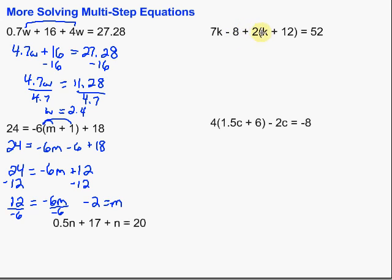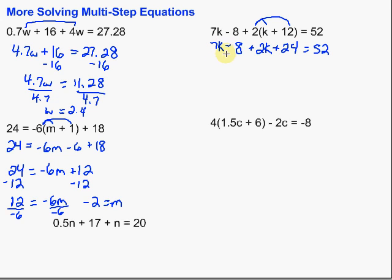In this next one, we've got parentheses again, so we need to get rid of those. We distribute that 2 through: 2 times k is plus 2k, and 2 times 12 is plus 24. So we have 7k minus 8 plus 2k plus 24, equal to 52. Then we combine like terms: 7k and 2k combine to 9k, and negative 8 and 24 combine to plus 16. So we have 9k plus 16 equals 52.